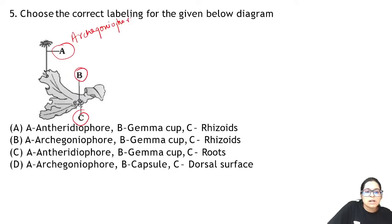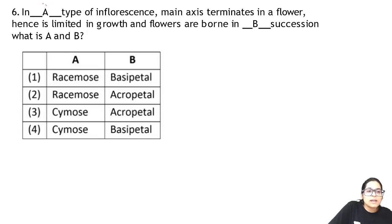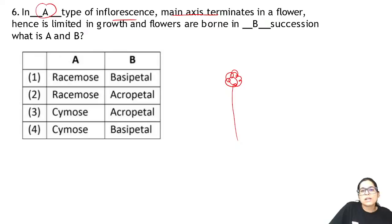Question five is an NCRT diagram about Pinus — what is it indicating? Looking at the diagram, there will be a cup-like structure — that is a gamma cup — and this will be a rhizoid. So this answer is B.